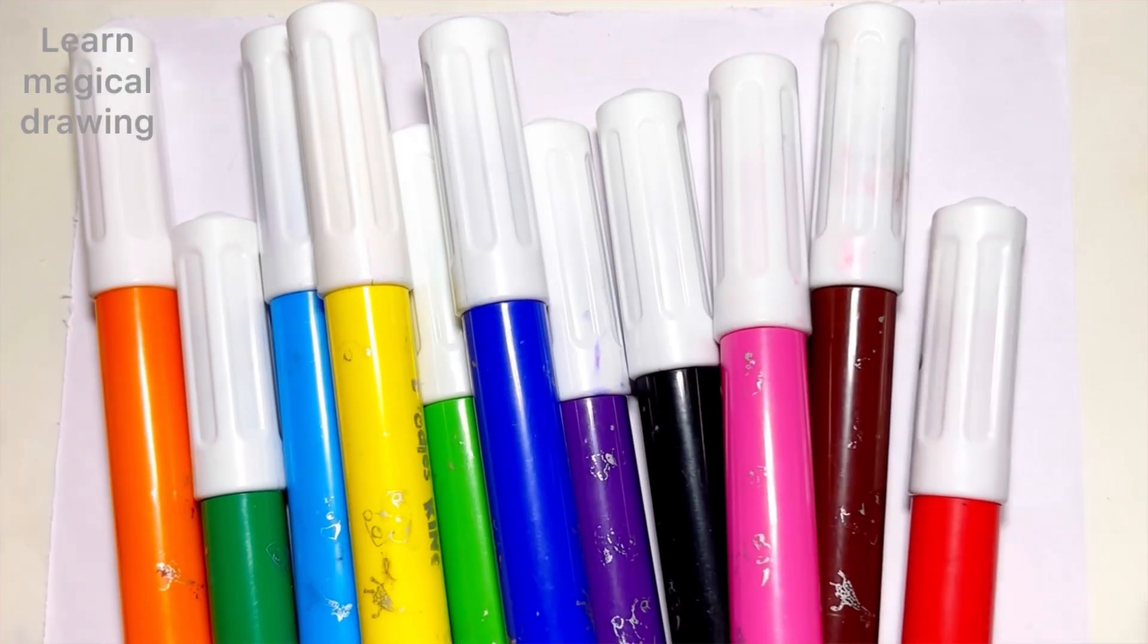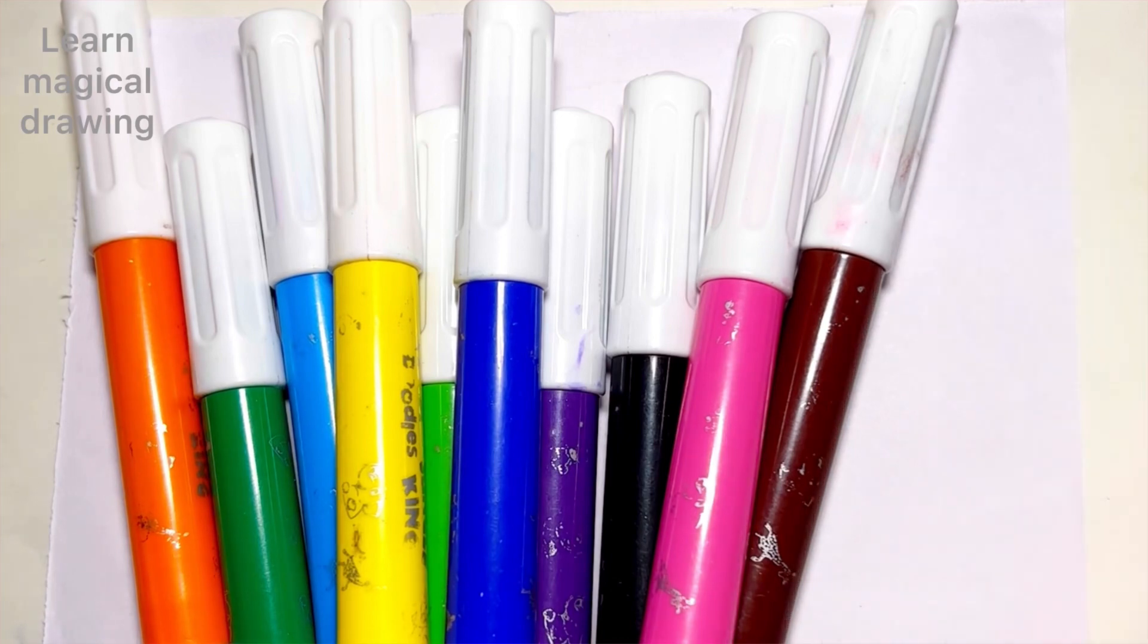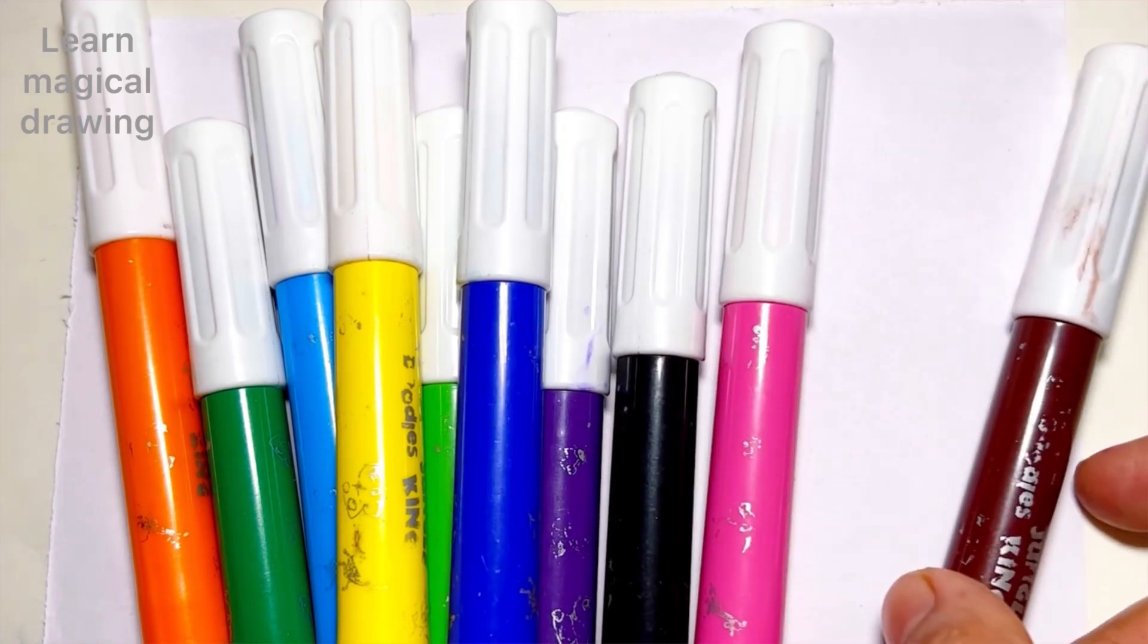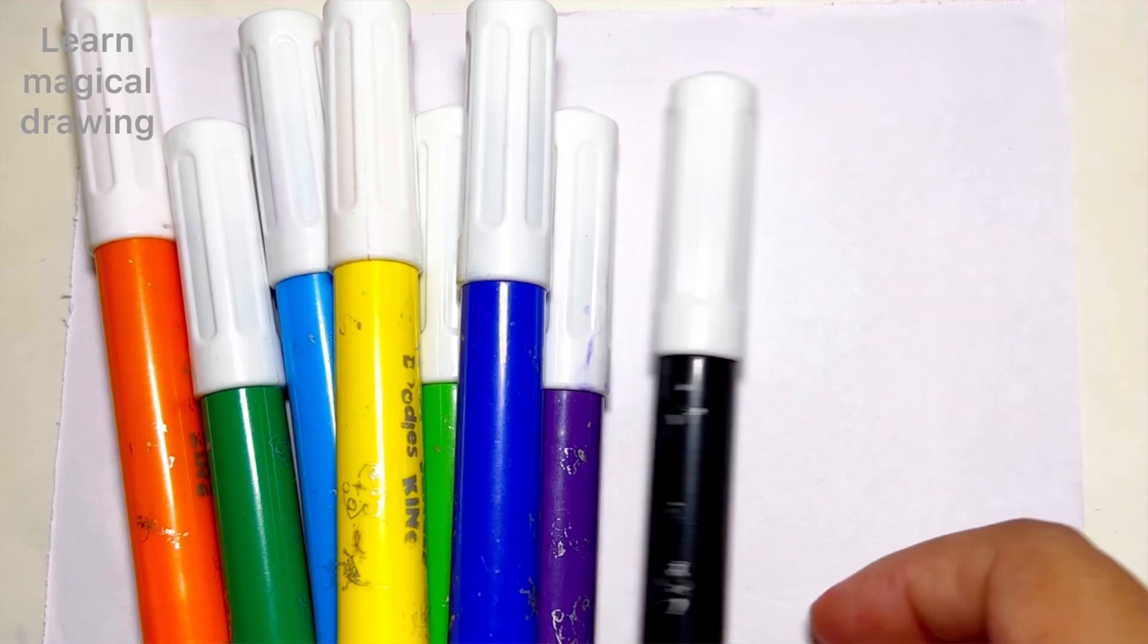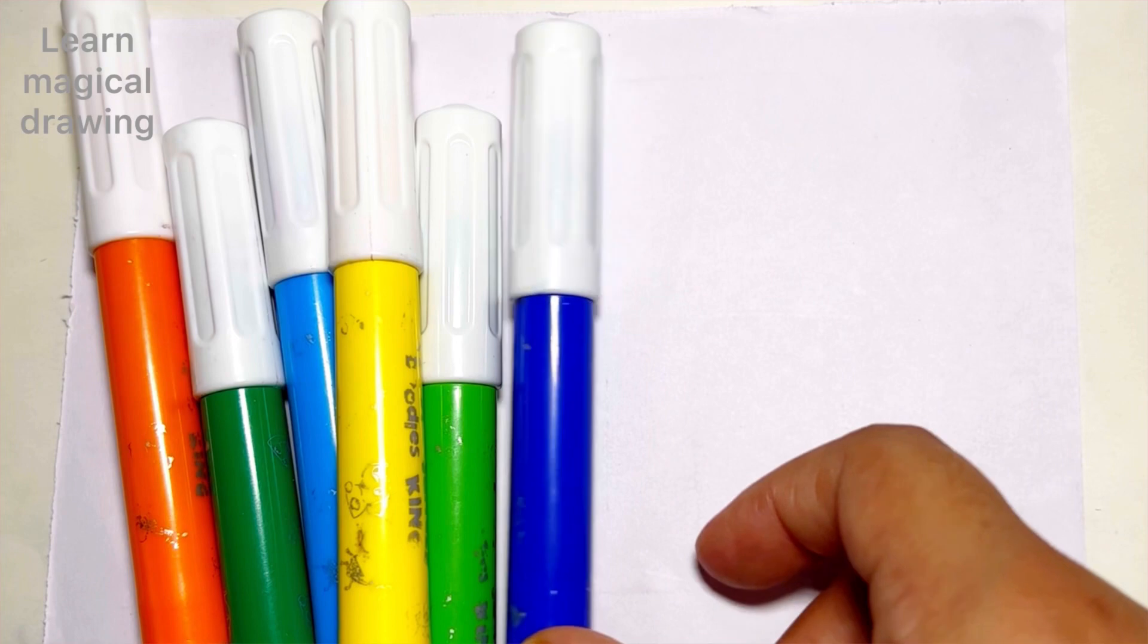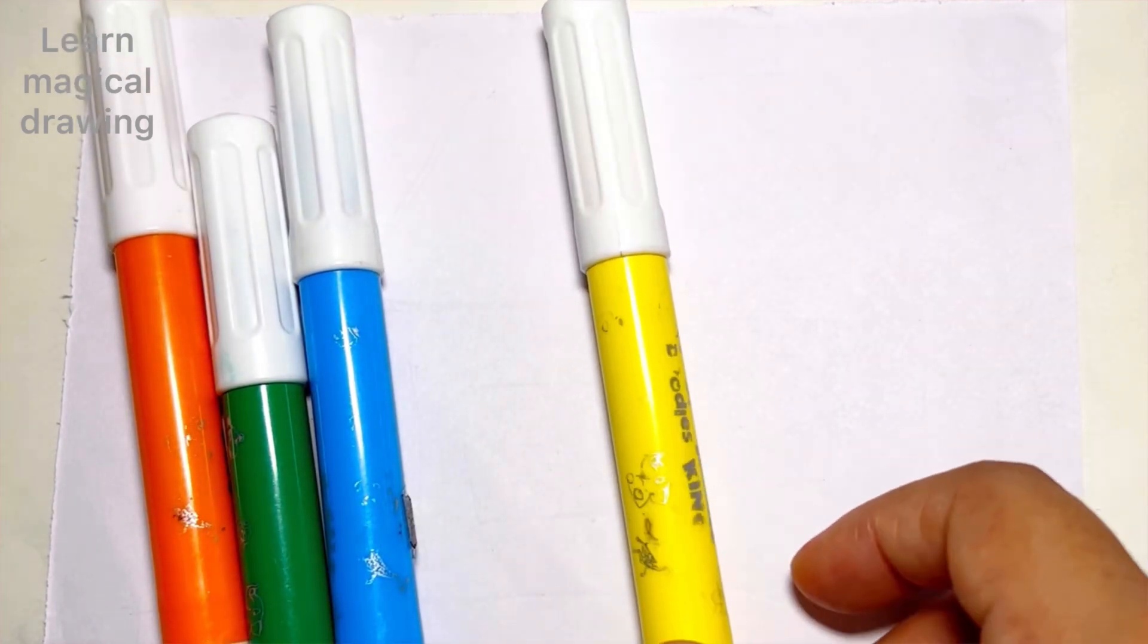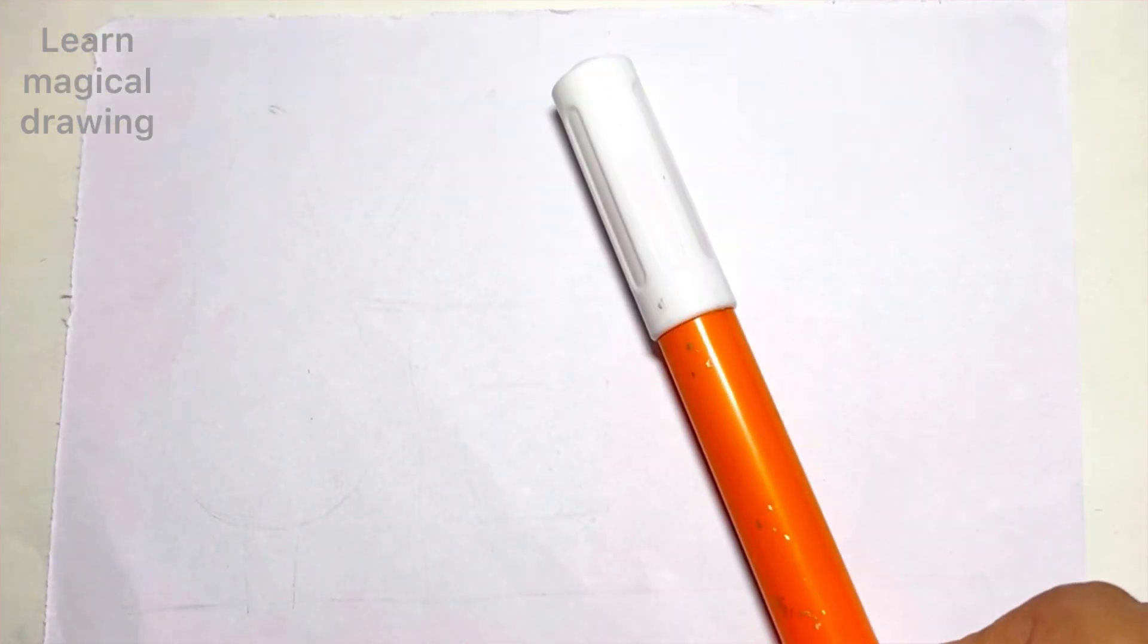Hello everyone, let's learn some colors. Red color, brown color, pink color, black color, purple color, blue color, green color, yellow color, sky blue color, dark green color, and orange color.